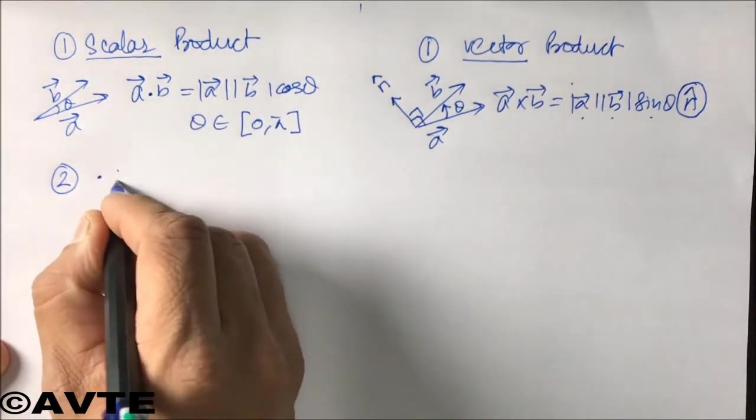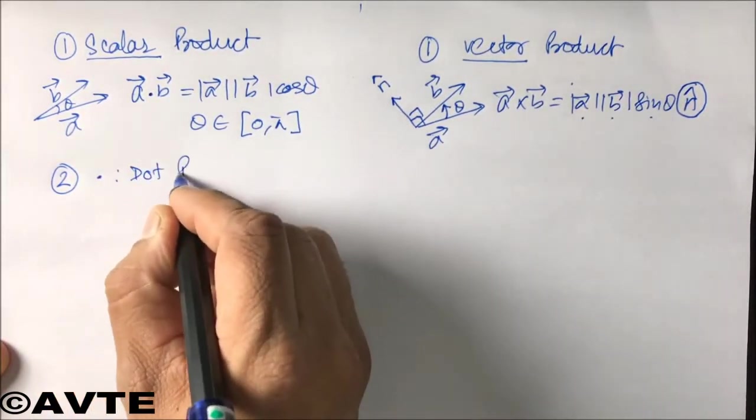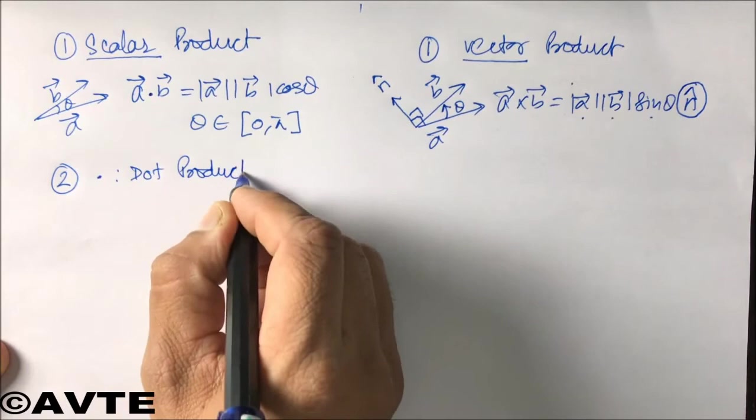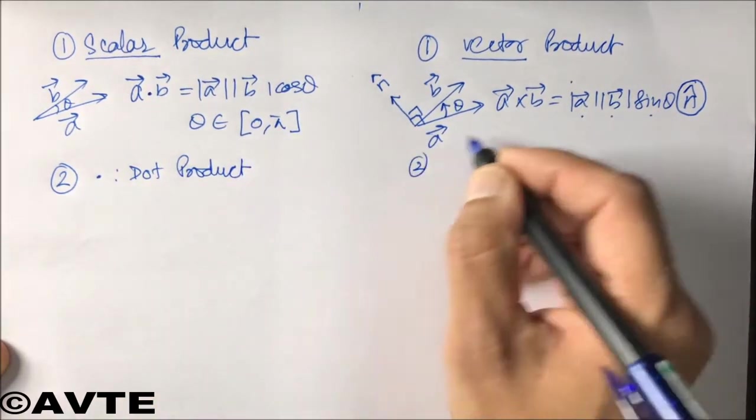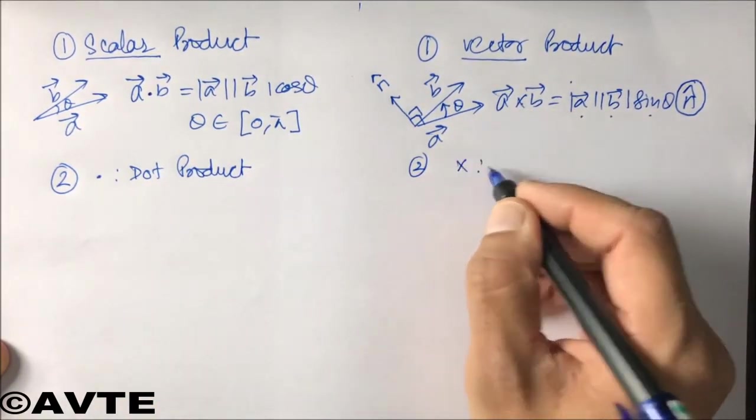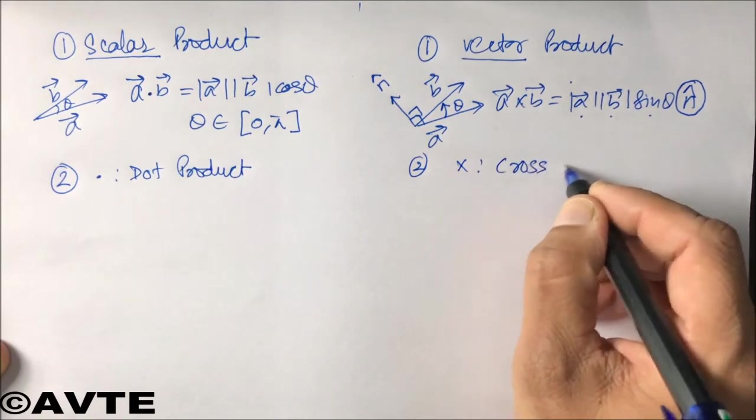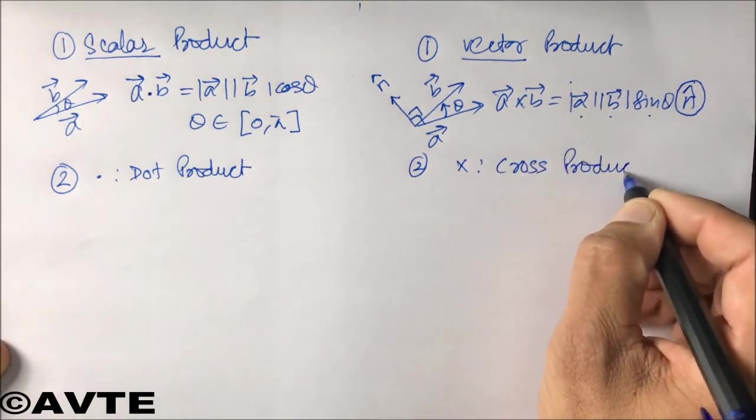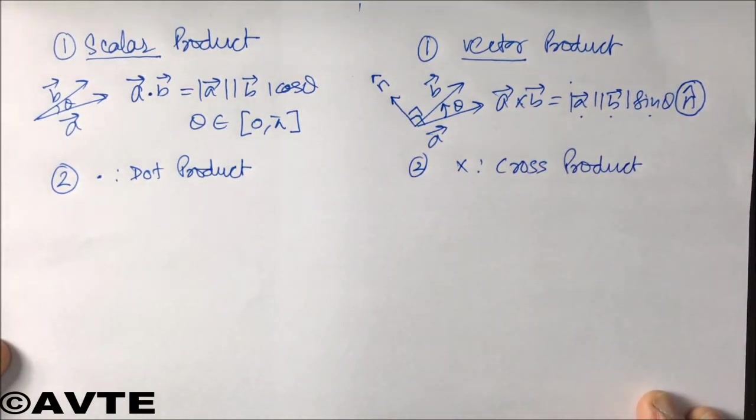The second difference is that because of this dot, it has the name dot product, and because of this cross, it has the name cross product. So even if they say find the cross product, it means they are saying find the vector product. And for dot product, it is the scalar product.